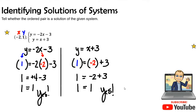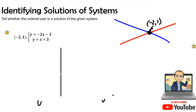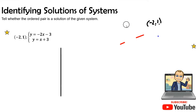So the answer is yes for both equations. This tells us that the point negative 2, 1 falls exactly where the two lines intersect. Therefore, the solution of this system is that point of intersection.